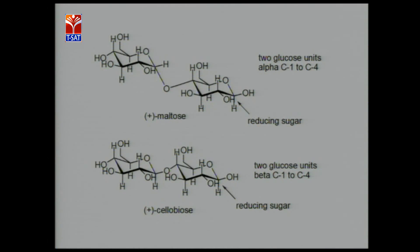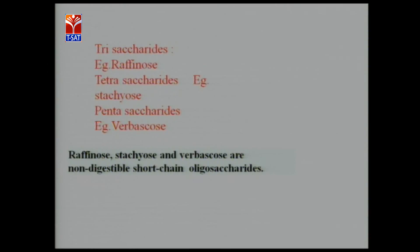There are chair and boat structures of these same disaccharides. Coming to other oligosaccharides: the trisaccharide example is raffinose, the tetrasaccharide is stachyose, and the pentasaccharide is verbascose. Raffinose, stachyose, and verbascose are non-digestible short-chain oligosaccharides. They are indigestible by the body and are generally present in plant material.